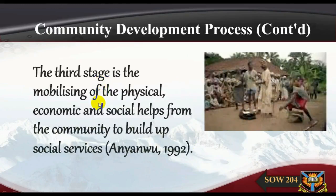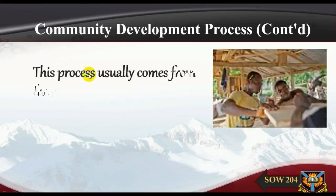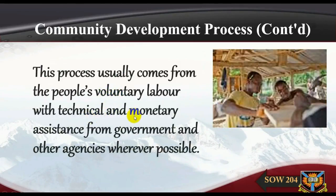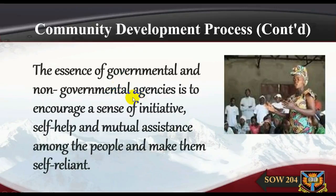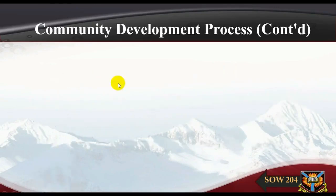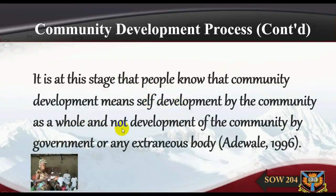The third stage is the mobilizing of physical, economic, and social assets from the community to build social services (An Yahoo, 1992). This process usually comes from the people's voluntary labor, with technical and monetary assistance from government and other agencies wherever possible. Once a committee starts working on a project expected to yield benefits to the whole community, members shall start contributing to its successful completion. The essence of governmental and non-governmental agencies is to encourage self-help and mutual assistance among people, making them self-reliant. It is at this stage that people understand community development means self-development by the community, not development by government or any external body.